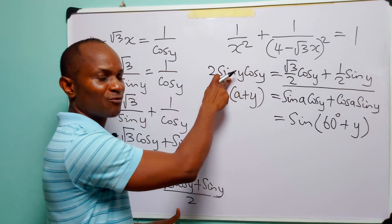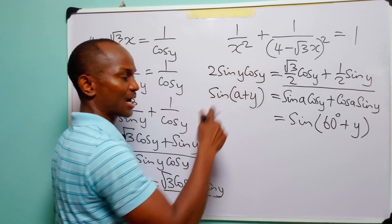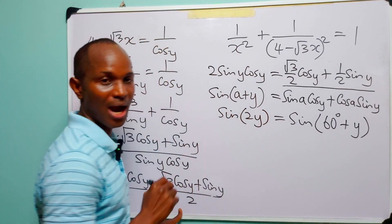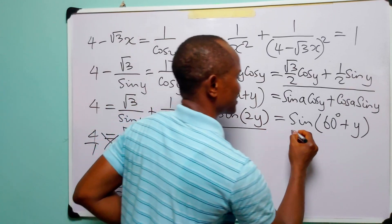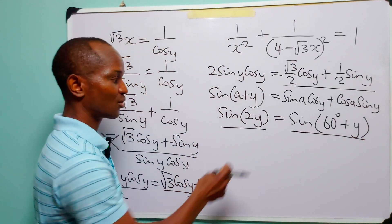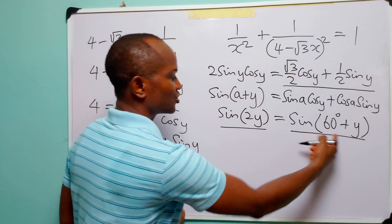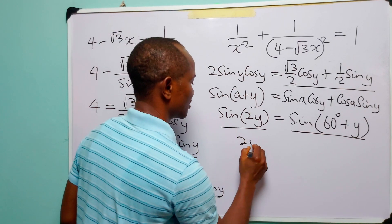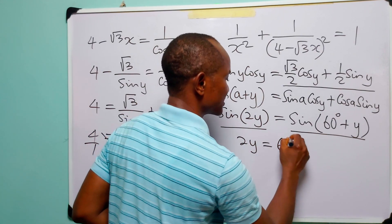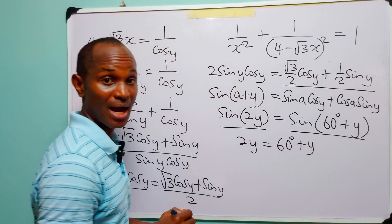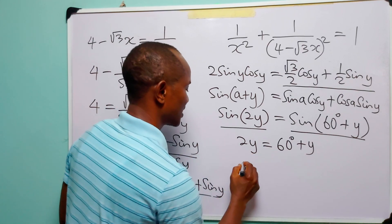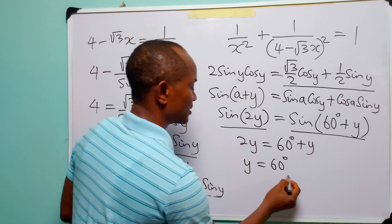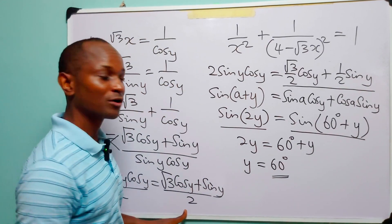And from our double angle identity we know that two sin y cos y is simply equal to sin 2y. Now we have a much simpler equation that we can solve for values of y. This equation has two branches. The first branch is that 2y is equal to 60° plus y. Subtracting y from both sides we have that y is equal to 60°. This is the first solution.